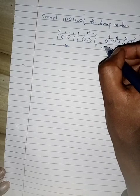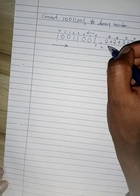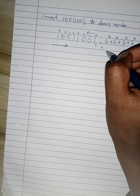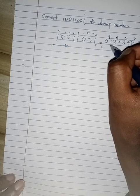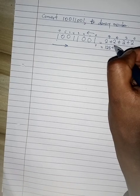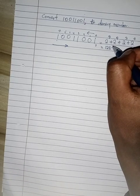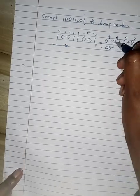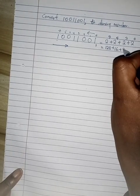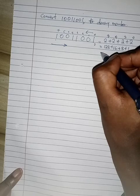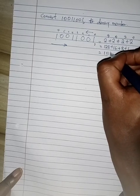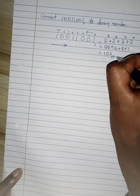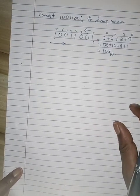So if you do this, this one becomes 2 raised to power 7, this is 128. Plus 2 raised to power 4 is 16. This is 8, and of course this is 1. So if you add all this, you are going to get 153, and of course this is to base 10.